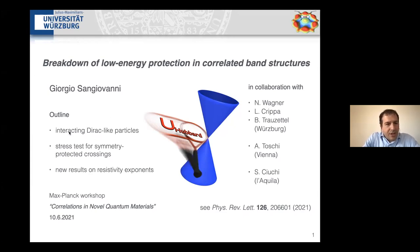So as I said, I'm going to change very dramatically the topic. Namely, I'm going to talk about protected Dirac crossings and how they survive the stress test that we can make by applying a Hubbard interaction to them. And so on the way, I'm going to show unexpected resistivity exponents for these liquids. So these results have been obtained primarily by Niklas Wagner, PhD student in my group, together with Lorenzo Krippa and Bjorn Trautzettl in Würzburg. Alessandro and Sergio also contributed to this recently published paper on that.